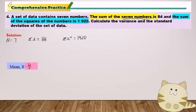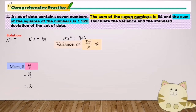The formula of mean is sigma x over n. So sigma x is 84 and n equals 7. Mean equals 84 over 7 equals 12. Now we find the variance.